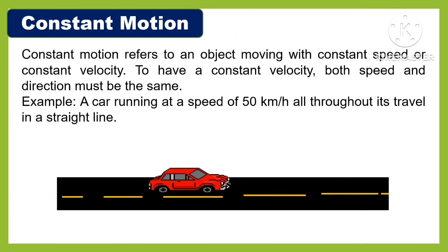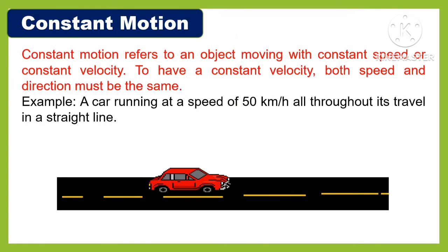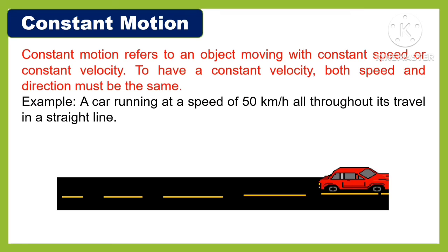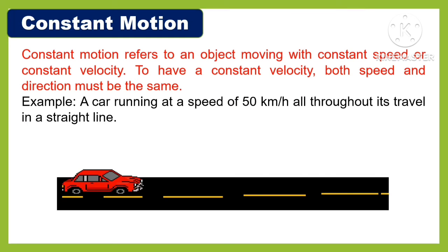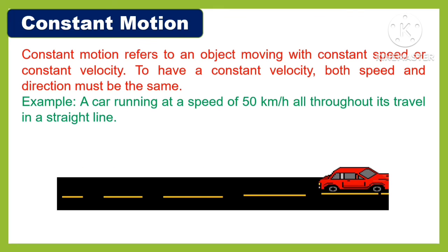Constant motion refers to an object moving with constant speed or constant velocity. To have a constant velocity, both speed and direction must be the same. For example, a car running at the speed of 50 kilometers per hour all throughout its travel in a straight line.